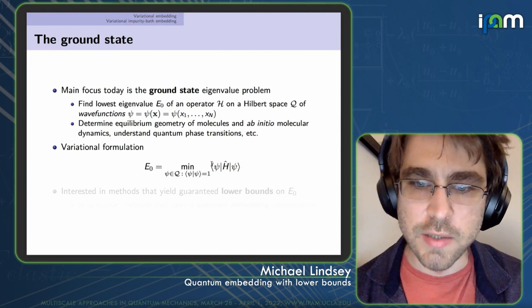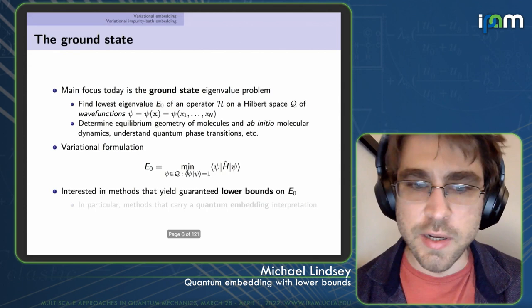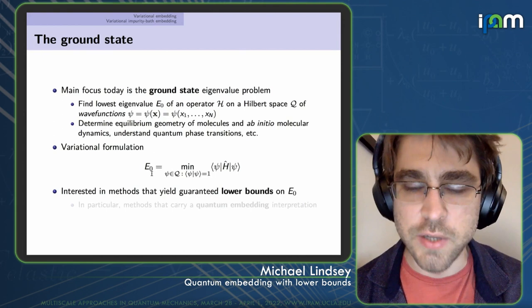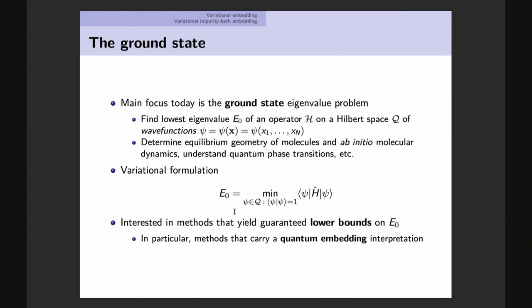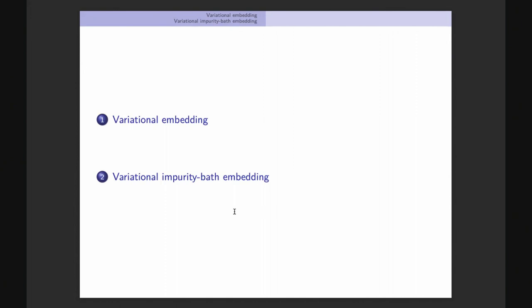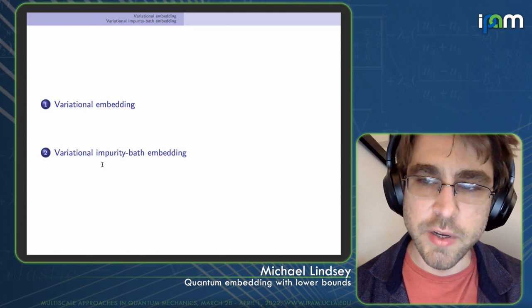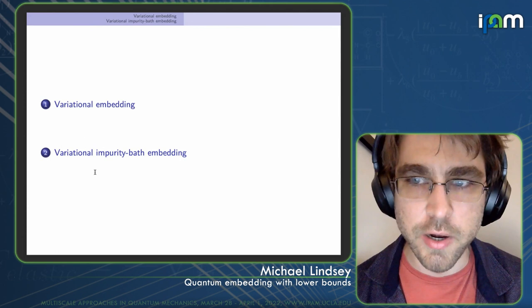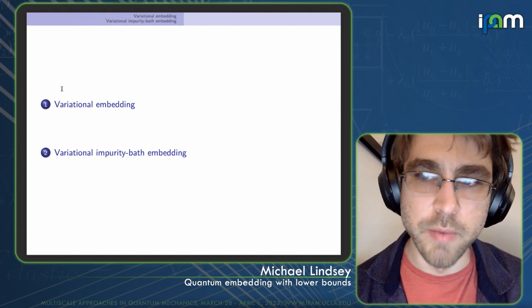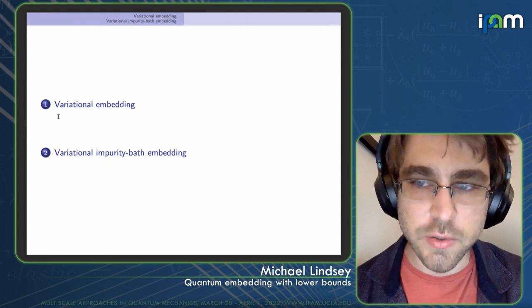We're interested in methods that yield guaranteed lower bounds on this ground state energy, in particular methods that carry a sort of quantum embedding interpretation. I'm going to talk about two such methods. The second part is more preliminary but hopefully paints some interesting ideas, and is more specific to the setting of fermions, where the embedded problems that arise are impurity problems. The first setting looks quite different in that the embedded problems are not impurity problems or ground state eigenvalue problems at all.